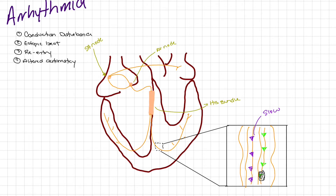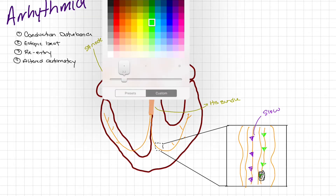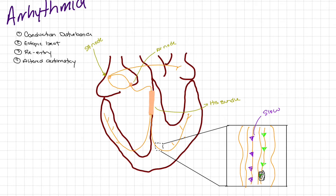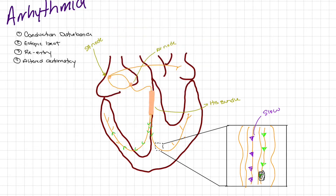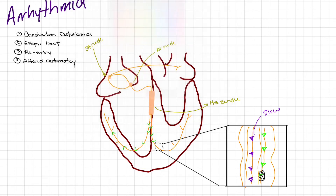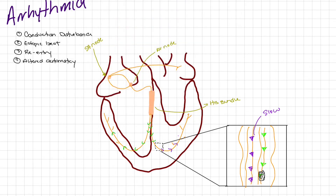This is why we see widening of the QRS in a bundle branch block. The impulse travels very quickly down the right bundle branch as it should, but when it reaches the left bundle branch, it travels quickly until it hits the block, then travels much slower. We see widening of the QRS complex because the bundle branches are not depolarizing at the same time. A conduction disturbance is a blockage in normal fast conduction pathways.